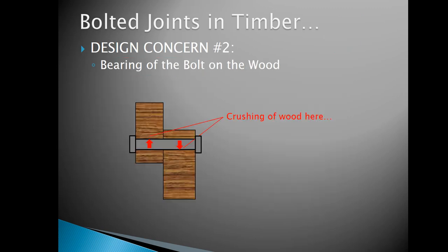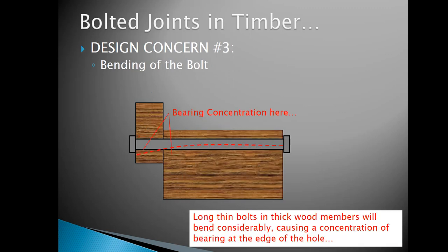Design concern number two is bearing of the bolt on the wood. When loads act, bearing occurs on the bolt, causing crushing of timber fibers above or below the connection. Besides crushing, you can cause bearing failure of the bolt itself, where the bolt rotates and bends downward due to the bearing load.